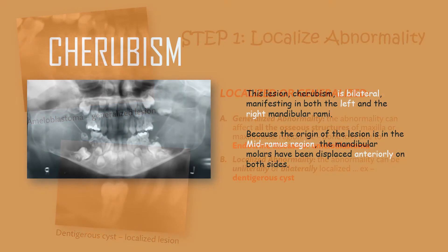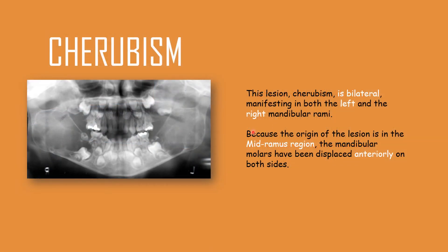For a bilateral lesion, cherubism is a good example. This lesion, cherubism, is bilateral, manifesting in both the left and right mandibular rami. Because the origin of the lesion is in the mandibular ramus region, the mandibular molars have been displaced anteriorly on both sides.